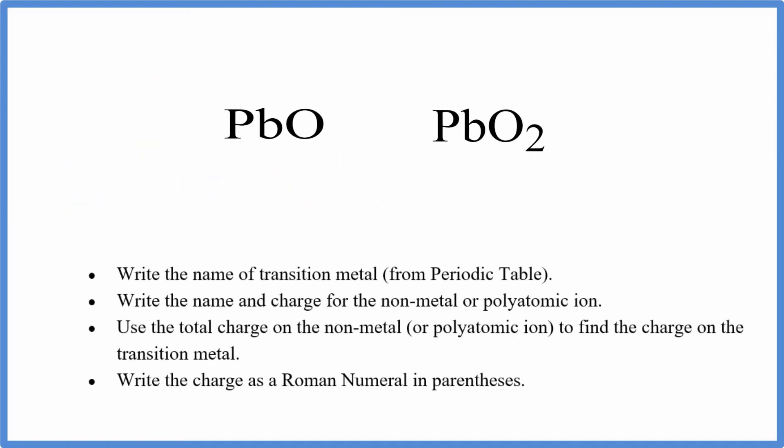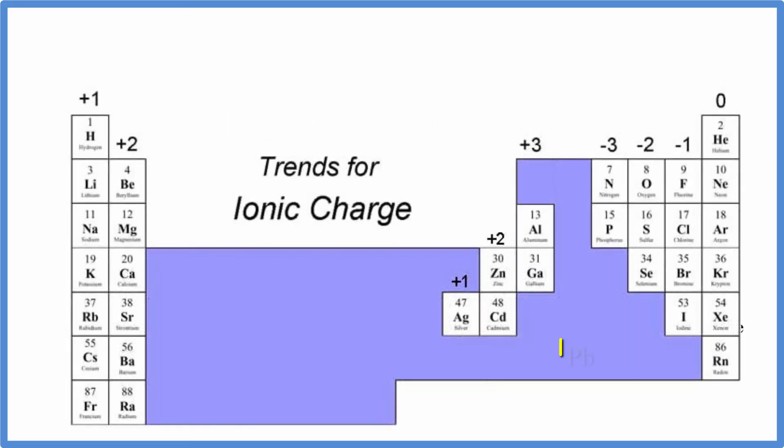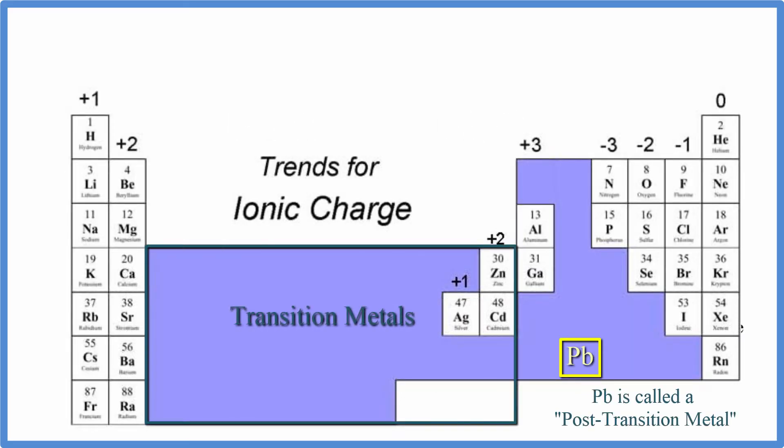So pause and write the name for these two compounds, PbO and PbO2. Note that Pb, lead, isn't technically a transition metal, but it is a metal that has variable charges. So we'll use the same rules as transitional metals.